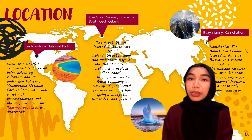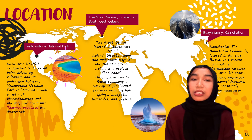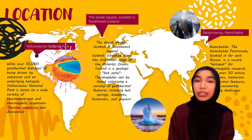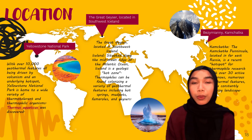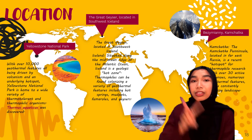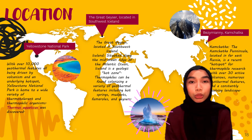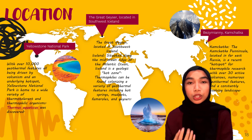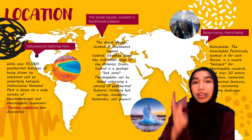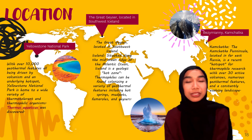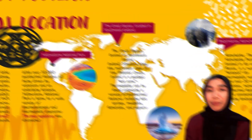Let's look at locations around the world where thermophiles can be found. The first is Yellowstone National Park in the United States of America, where the most popular thermophile was discovered — Thermus aquaticus. The second is the Great Geyser in southwest Iceland, where thermophiles colonize a variety of geothermal features. The last location is in Russia — active volcanoes — where thermophiles can also be found.